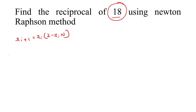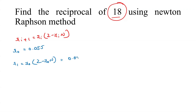I am taking the initial approximation x_0 = 0.055. Now, x_1 = x_0 * (2 - x_0 * n) = 0.055 * (2 - 0.055 * 18).